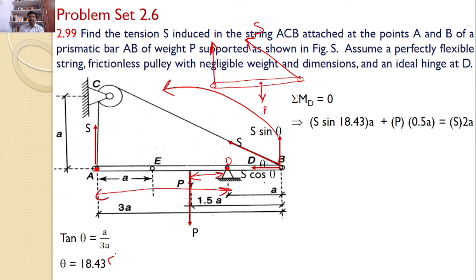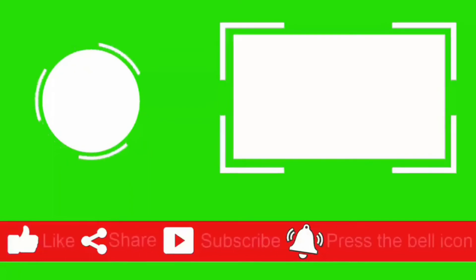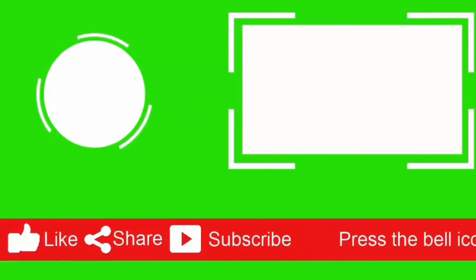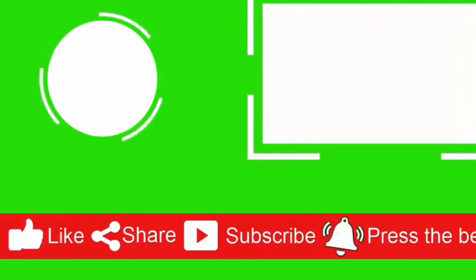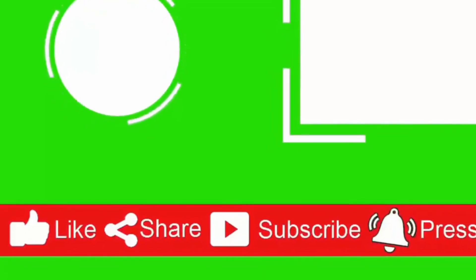The total distance is equal to 3A minus A, which equals 2A. Upon simplification, you will get S = 0.297P, which is the answer for the given problem. Thank you.